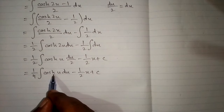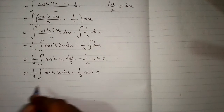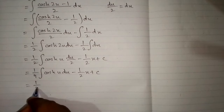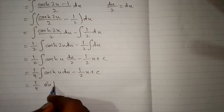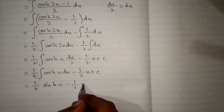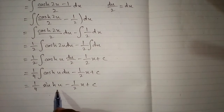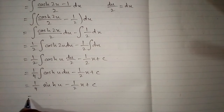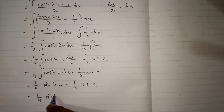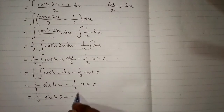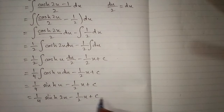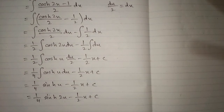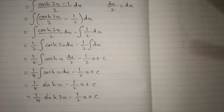We know that the integral of hyperbolic cosine of u is hyperbolic sine of u. Putting back the value of u which is 2x, the required answer is 1 upon 4 times hyperbolic sine of 2x minus one half x plus c, where c is the constant of integration.